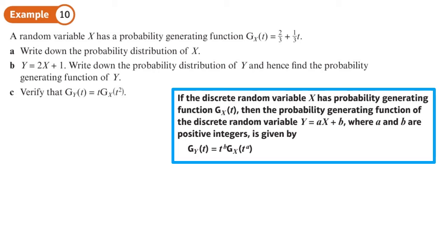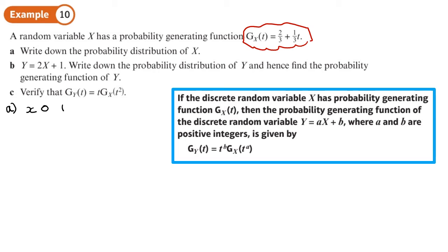Given the probability generating function, write down the probability distribution of X in a table. The outcomes start from zero because you have t to the power zero, and it's only going to be zero and one. The probability for zero is 2/3 and for one is 1/3 — you just need the coefficients of t to get those probabilities.